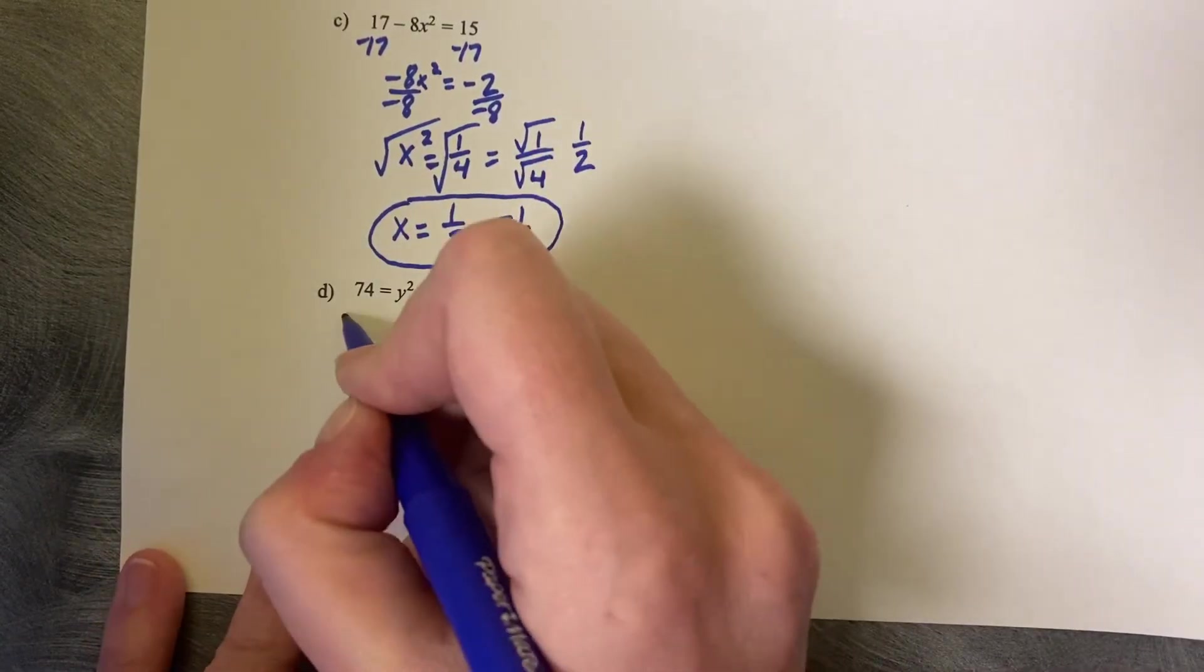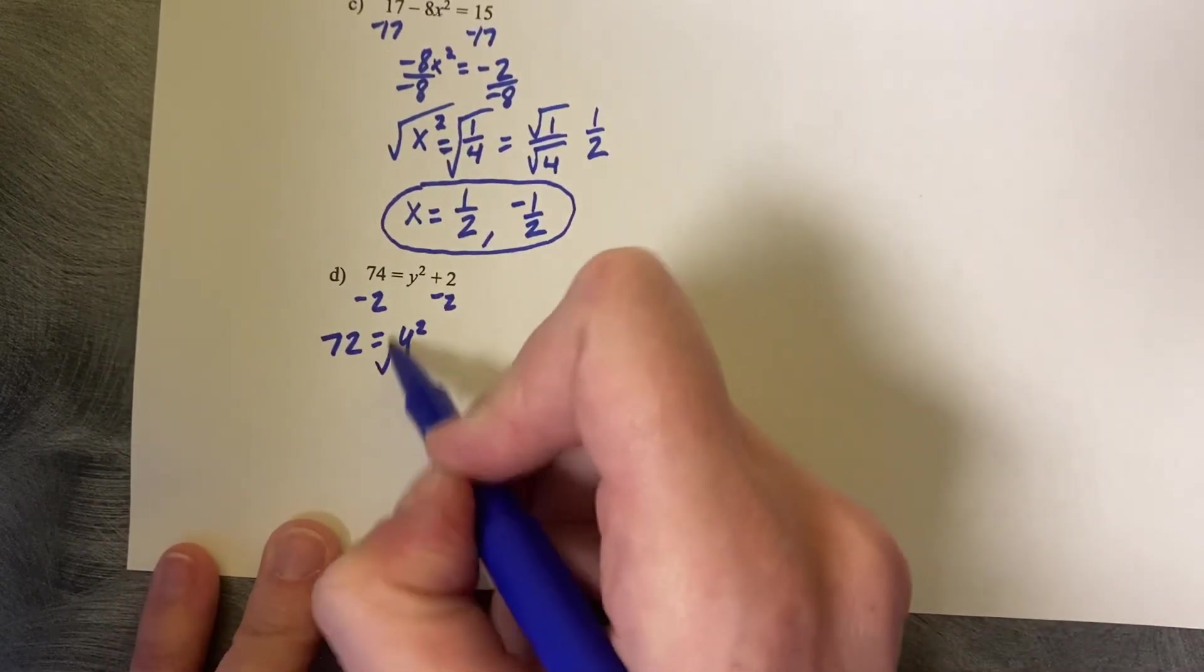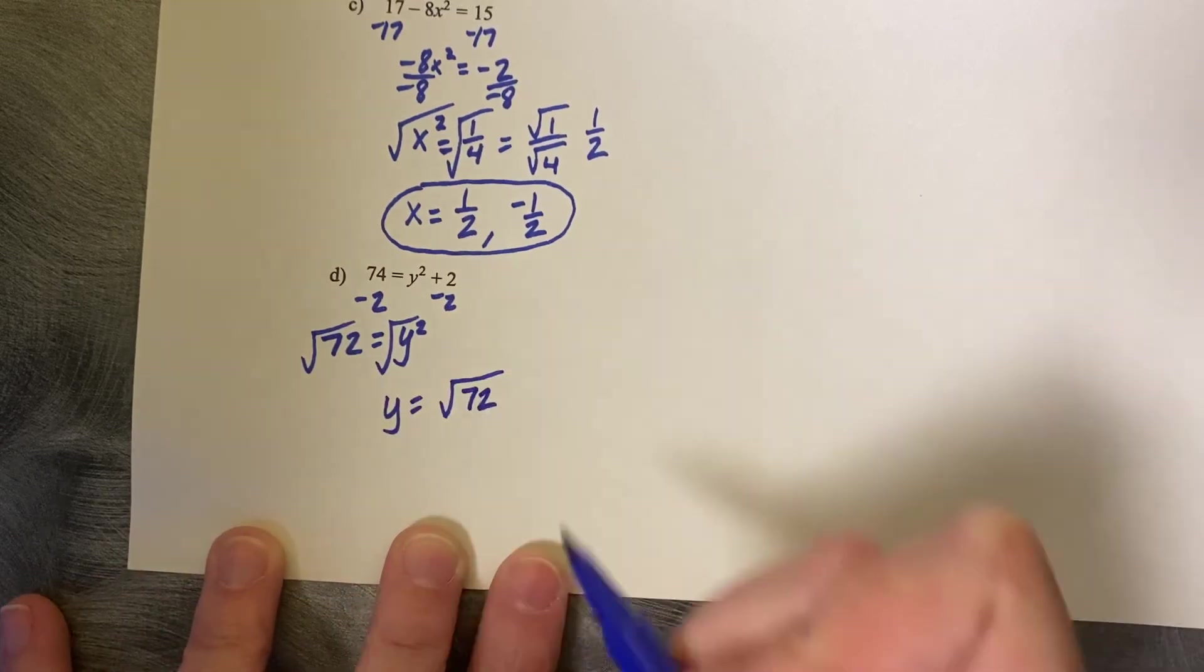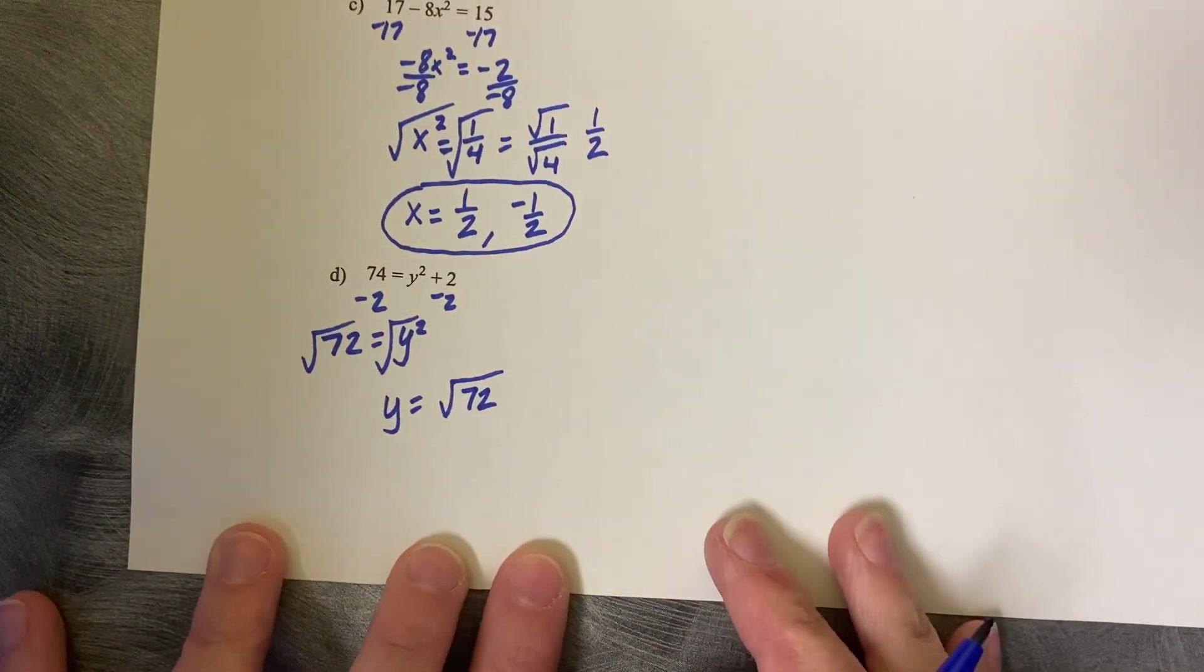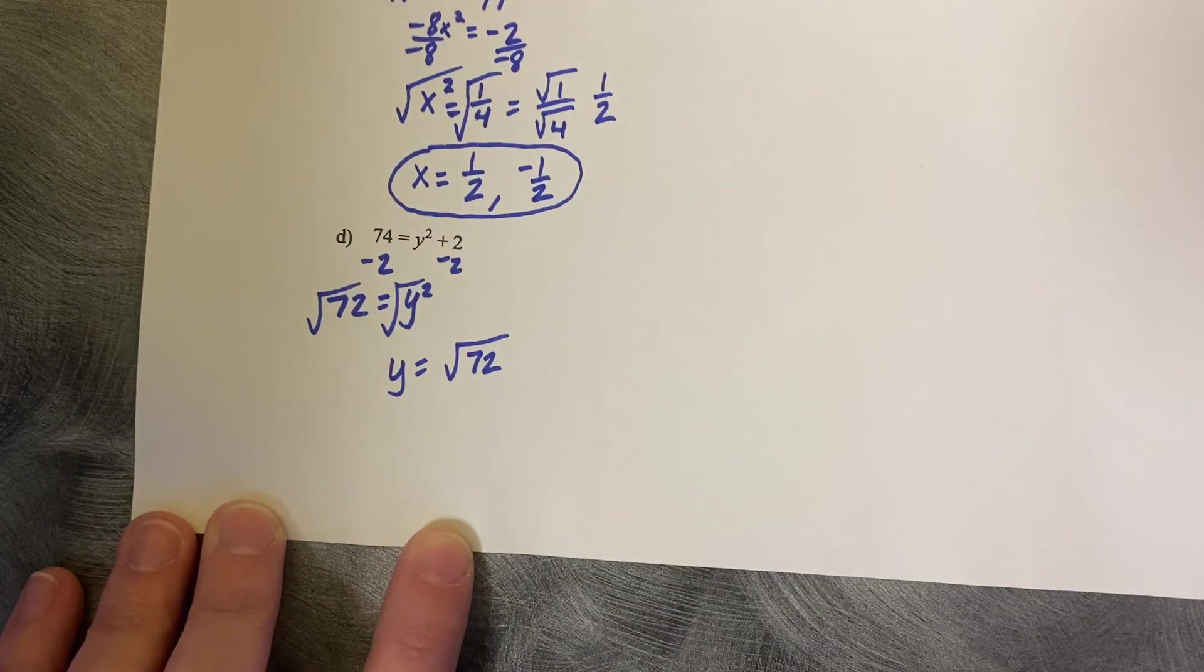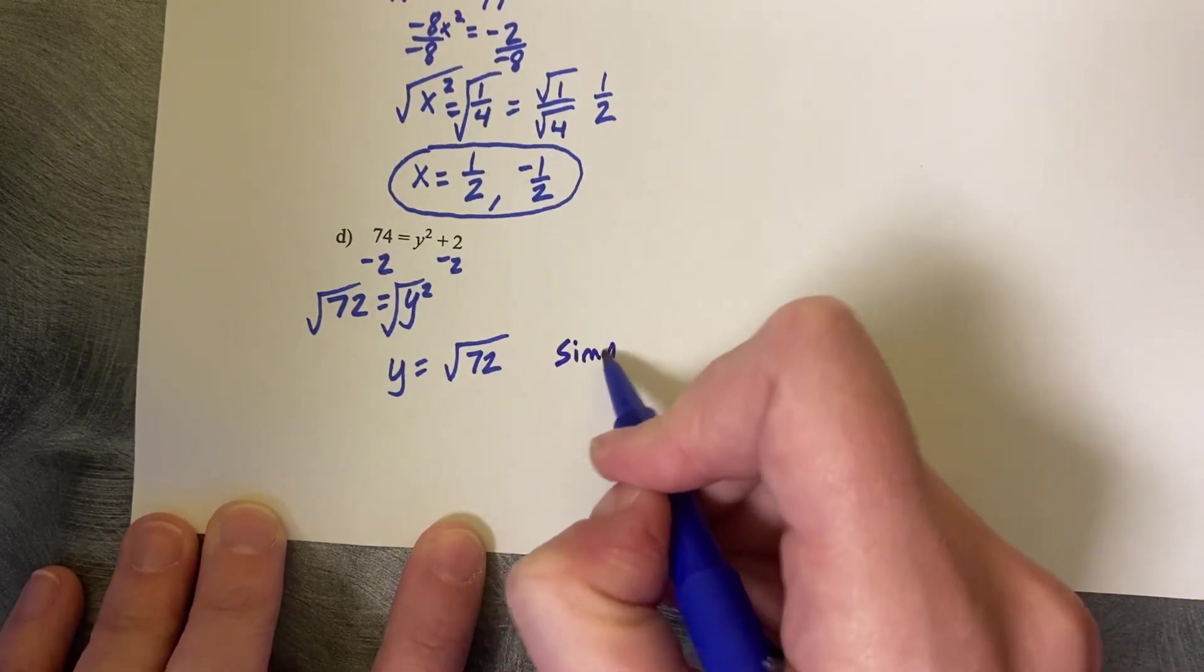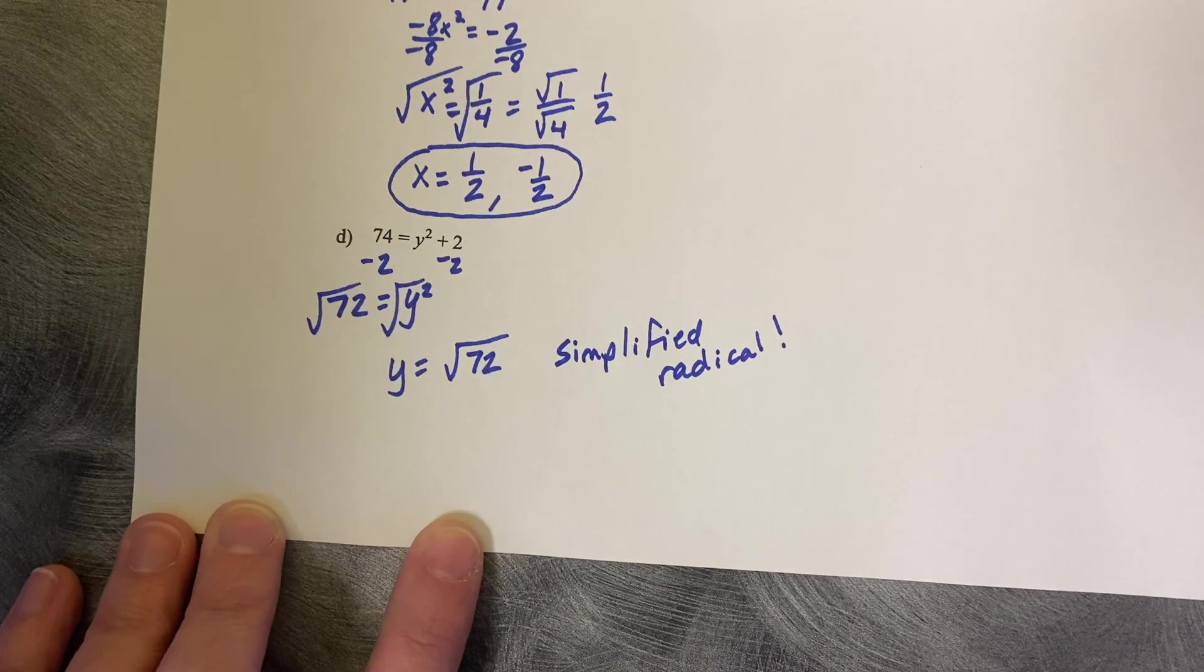Last one. Minus 2. Y squared equals 72. Square root, square root. So then we get y equals the square root of 72, which is not a nice number. If you type that into your calculator, you're going to get a decimal. In this class, do not use the decimal unless it's in a context. This problem is what I like to call a naked number problem. It is not in a context. And it does not ask for the decimal. So what you need to do is leave it as an exact simplified radical.